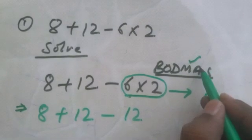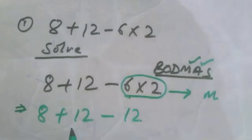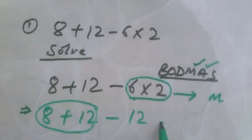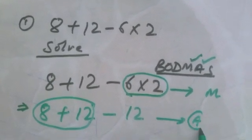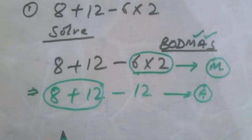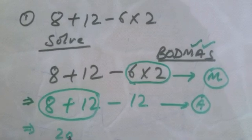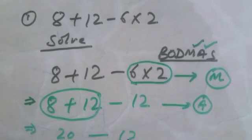We perform the addition: 8 + 12 = 20, giving us 20 - 12.